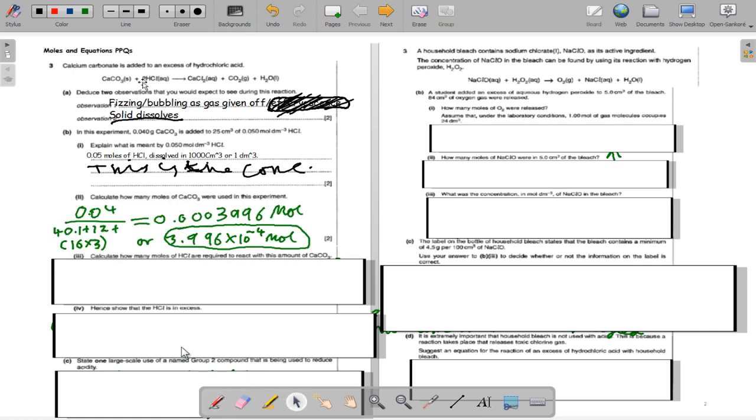How many moles of carbonate reacted? 3.996 times 10 to the minus 4. The molar mass is 40.1 for calcium, 12 for carbon and 16 times 3 for oxygen. We divide 0.04 by that to get 0.0003996. If you have a fancy calculator that does it in standard form, then you get that instead of this.